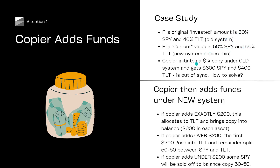What I'm asking you to imagine is if you've copied for $1K under the old system, so you've got a 60-40 — so $600 and $400 — but the PI clearly has a 50-50. So you've got a bit of a problem because you're not in sync, and this system is designed to sort that. So let's consider three different copy amounts. The easiest one is if you add exactly $200 to the copy — the system simply adds the whole $200 to TLT, which gives you $600 of each asset and puts you in sync at 50-50, same as the PI.